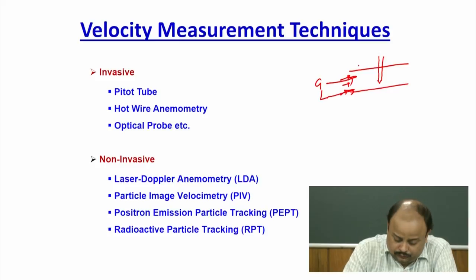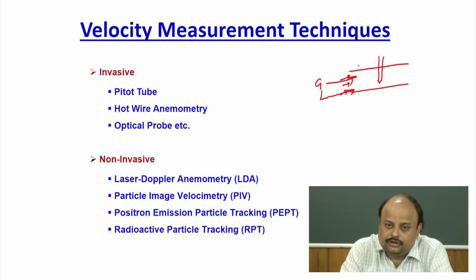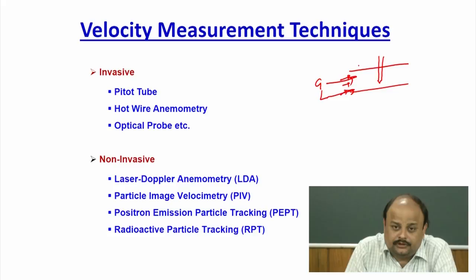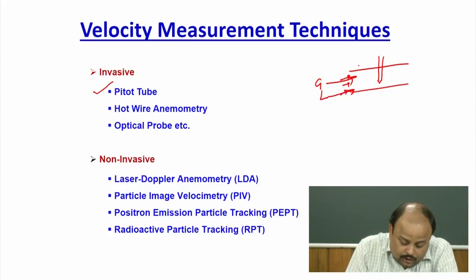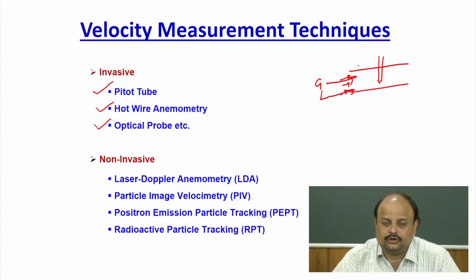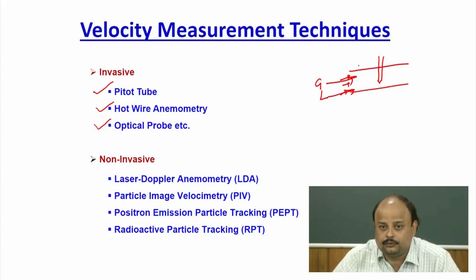Invasive velocity measurement techniques that are widely used include the Pitot tube, hot wire anemometer, and optical fiber probe. The Pitot tube is not widely used now, but I will cover it because most of you have already studied it in undergraduate fluid flow courses. We will then move to hot wire anemometer and optical fiber probe, and then discuss non-invasive techniques including PIV, LDA (laser Doppler anemometry), particle image velocimetry, positron emission particle tracking, and radioactive particle tracking.